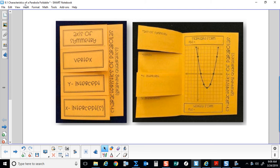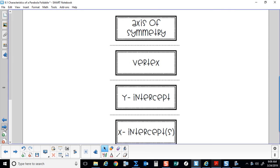Today we'll be identifying characteristics of a parabola or graphs of a parabola. We'll be looking at the axis of symmetry, the vertex, the y-intercept, and the x-intercepts.